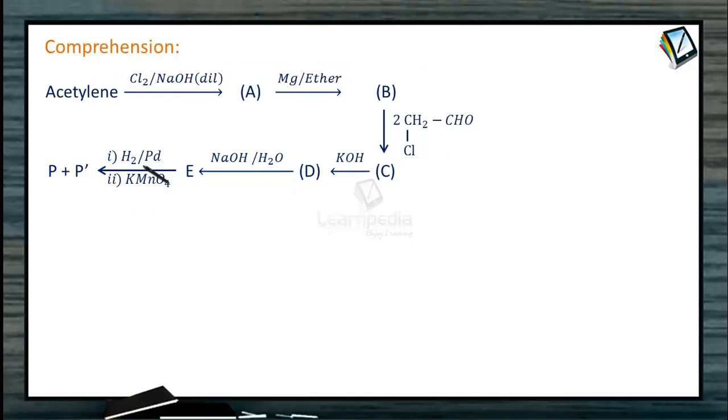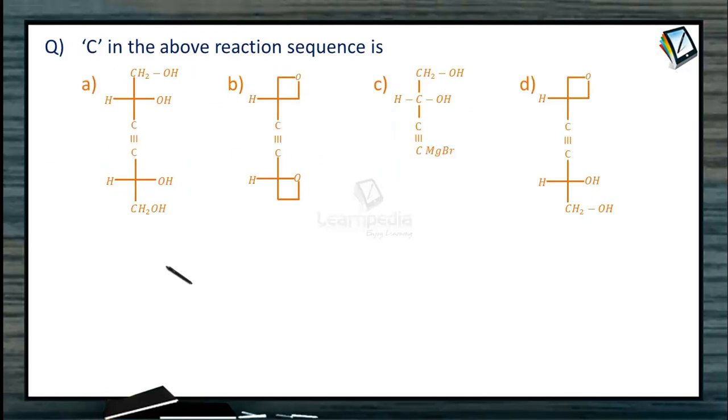So we are starting with acetylene and then allowing it to react with chlorine in the presence of dilute alkali. What is the product? Let us first write the sequence of the reactions and then answer the questions. So we are given acetylene and then allowed to react with chlorine in the presence of dilute NaOH. What will happen? Chlorine in the presence of dilute NaOH is nothing but NaOCl. So that these two acidic hydrogens will be replaced by chlorines.